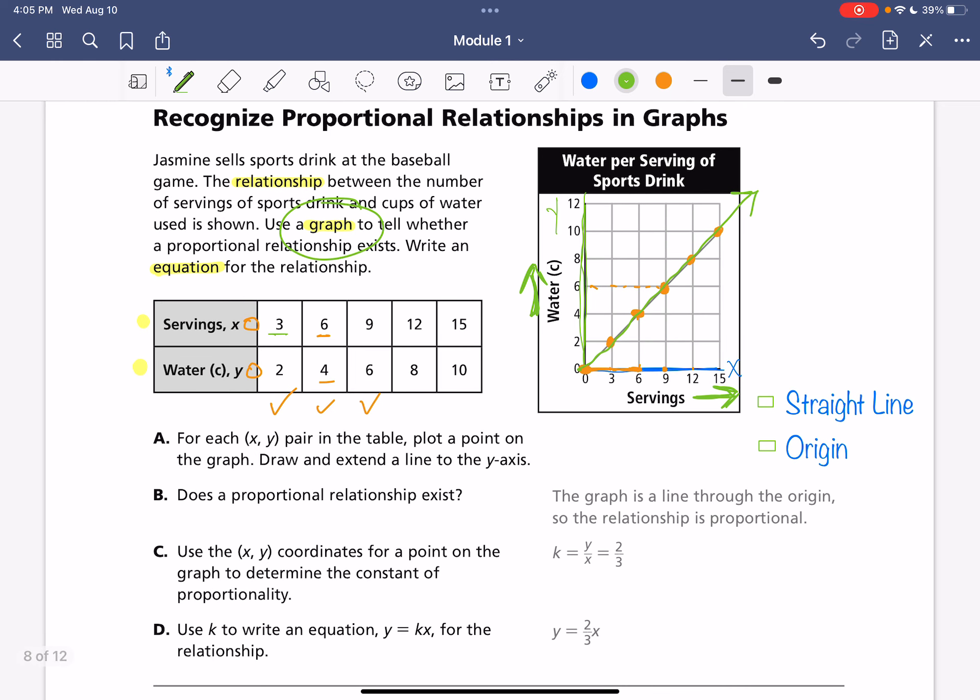So there's our first part, we made our graph. For each pair in the table, plot a point on the graph, draw and extend a line to the y-axis. If we extended that, it would go through that origin. So for something to be proportional, it has two little checks that it needs. It needs to be a straight line and it needs to go through the origin. So here, this is proportional because it goes through the origin and it is a straight line. It increases at a steady rate and will continue to increase at a steady rate. So yes, it is proportional. It meets both of these check marks.